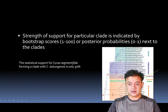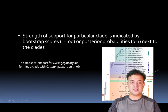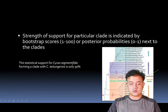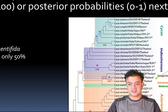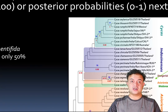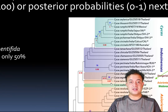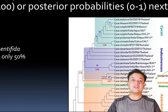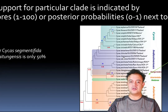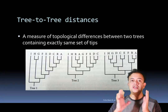The strength of support for a particular clade is indicated by bootstrap scores for maximum likelihood and maximum parsimony, or posterior probability scores for Bayesian inference. For example, the statistical support for Cycas segmentifida forming a clade with Cycas titungensis was only 50% by bootstrap proportion, versus 69% by Bayesian posterior probability.